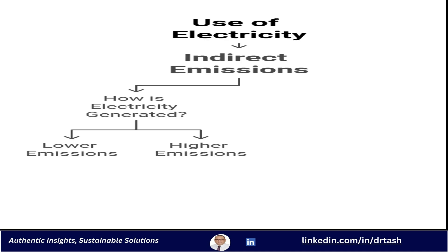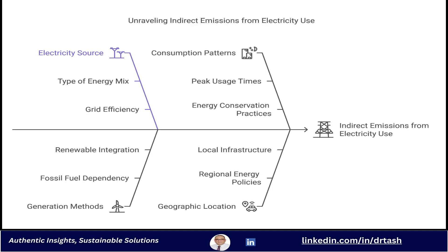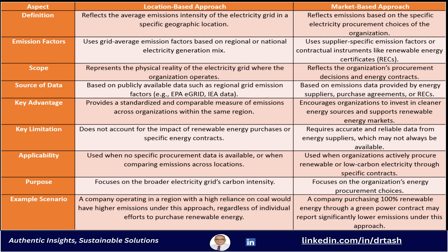Next, we need to look into indirect emissions, especially those tied to using electricity, which can be a big chunk of an organization's footprint. Electricity always seems so clean at first glance — but it all comes down to where that electricity is coming from, how it's being generated. Electricity is like this hidden carbon footprint — easy to forget that flipping a switch or charging your phone actually has an impact, because it all comes back to how that electricity is being generated. That's where Section 7.4 comes in, giving us guidance on how to account for these emissions from imported electricity. The standard gives us two different ways to deal with this: the location-based approach and the market-based approach.